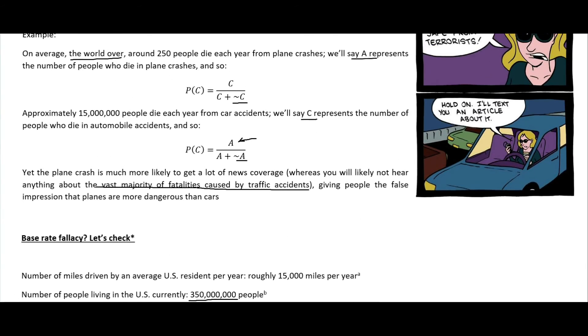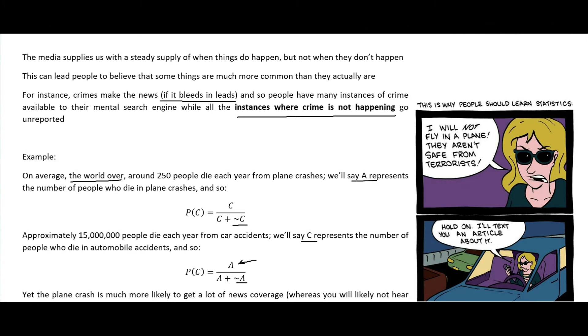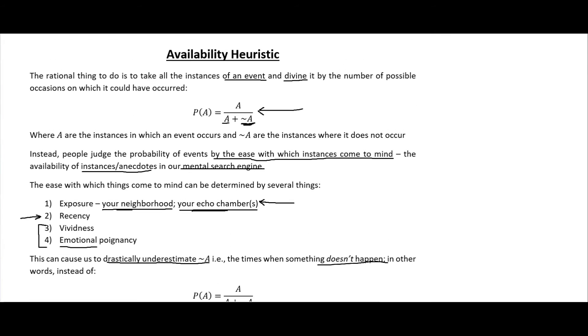Anyway, that's pretty much everything as an introduction to this availability heuristic. The take-home message is when you're trying to come up with the probability that something could happen, keep these four things in mind.